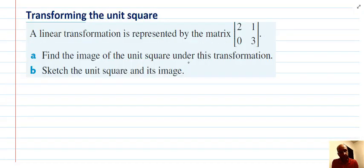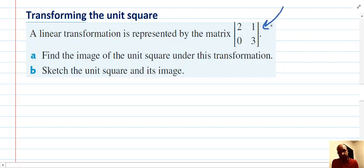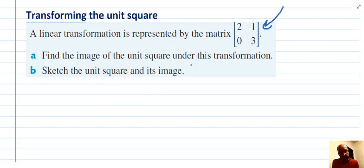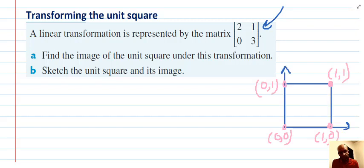At the beginning of the video, we defined the unit square. So transforming the unit square, let's look at an example. A linear transformation is represented by this matrix here. And we need to find the image of the unit square under this transformation, and sketch the unit square in its image. The effect of a linear transformation can be studied by its effect on a unit square, as we said at the beginning of the video. So let's study. And just for clarity, I've popped in our unit square there, if you're still getting used to that.